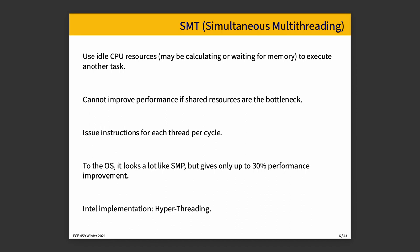There exist non-SMP-type systems. Cell, used in the PlayStation 3, has a non-SMP architecture because not all processors are the same. SMT — simultaneous multi-threading — is the non-Intel-branded name for what we commonly call hyper-threading. It uses these idle CPU resources and, as mentioned, only gives about 30% performance improvement.